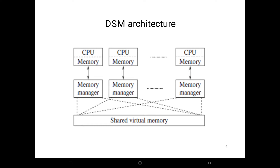Each node of the system consists of one or more CPUs and a memory unit. As seen in this diagram, the nodes are connected by a high-speed communication network.